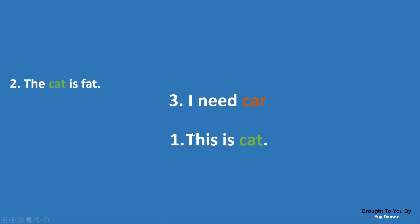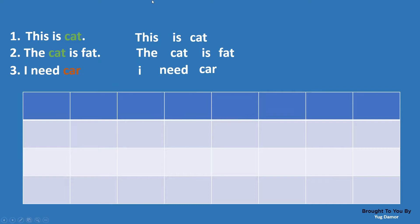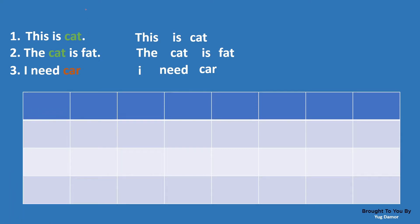If we take these two combinations, then we can say that these two sentences are also not similar. As humans we can easily understand that one sentence is talking about cat, another is also about cat, and another is about car. But a computer cannot understand like this — a computer only understands numerical data. So we have to somehow convert these sentences into numerical form so that the computer can determine if there is similarity between those two sentences or not.